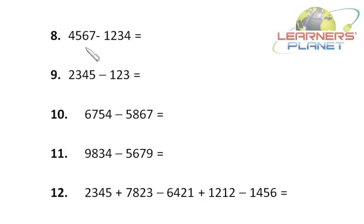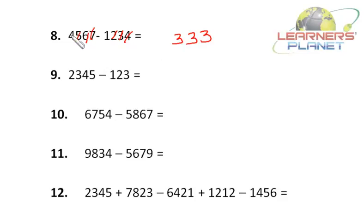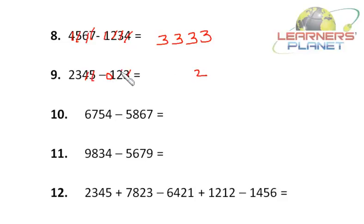Now let's take the problem 4567 minus 1234. It's 7 minus 4 is 3, 6 minus 3 is 3, 5 minus 2 is 3, and 4 minus 1 is 3. Now let's take the next problem where we have 4 digits and 3 digits — I just put a 0 there to make them even. Then 5 minus 3 is 2, 4 minus 2 is 2, 3 minus 1 is 2, and 2 minus 0 is 2. So the answer is 2, 2, 2, 2, 2.